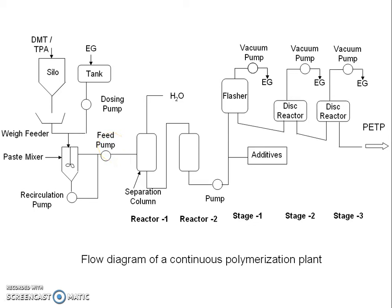This paste is fed along with catalysts and additives to the first stage of transesterification by a feed pump. The transesterification takes place in two reactors, reactor 1 and reactor 2. The separation of volatile reaction products — methanol or water — takes place simultaneously in a separation column. Transesterification continues in the second stage till the desired degree, i.e. almost 100%, is achieved.